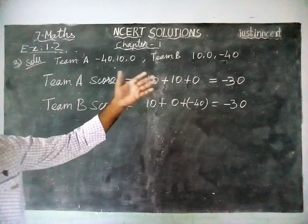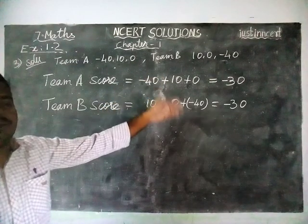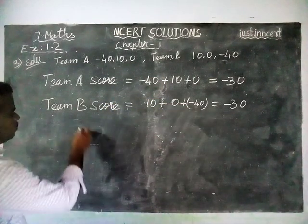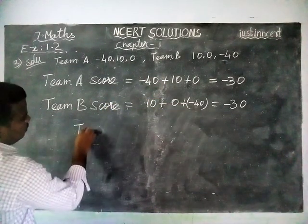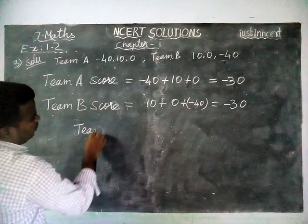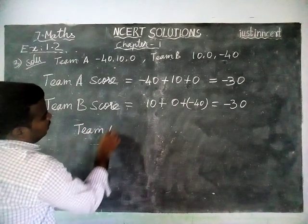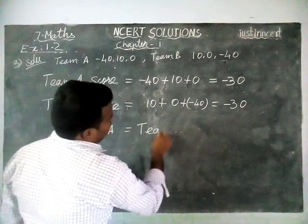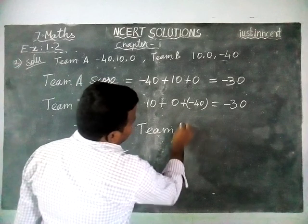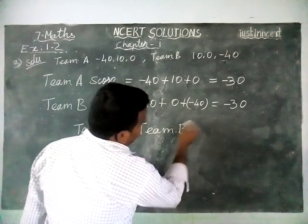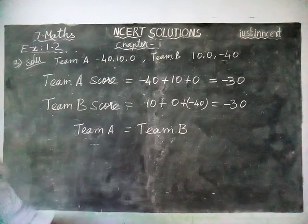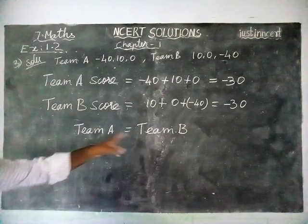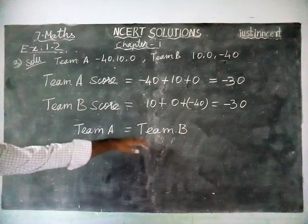The greatest number is 40, and in front of 40 there is a minus sign, so the answer is minus 30. So both teams scored the same marks — minus 30 and minus 30. Therefore team A is equal to team B, and both teams are equally scored.